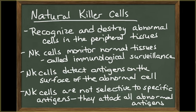Lymphocytes generally ignore the body's own cells unless they become abnormal. Natural killer cells are responsible for recognizing and destroying abnormal cells in the peripheral tissues — a process called immunological surveillance. Natural killer cells recognize an abnormal cell by detecting antigens on the surface of the abnormal cell that are not found on normal cells. Natural killer cells respond to a variety of abnormal antigens and are not selective. They will attack any cell that contains an abnormal antigen, whether it is bacteria in interstitial fluids, body cells infected with viruses, or cancer cells.